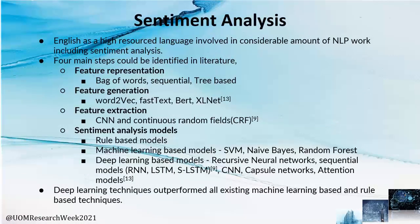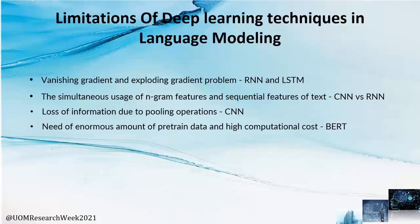Moving on, let's discuss sentiment analysis. For highly involved languages in NLP like English, deep learning techniques such as CNNs, RNNs, and attention models have achieved better results without the use of any language-dependent features. Four main steps could be identified: feature representation, feature generation using language-independent features such as Word2Vec and FastText models, feature extraction, and sentiment analysis models. Limitations of deep learning techniques include the vanishing gradient problem, simultaneous usage of n-gram and sequential features, loss of information due to pooling in CNNs, and the need for large corpora for attention models.